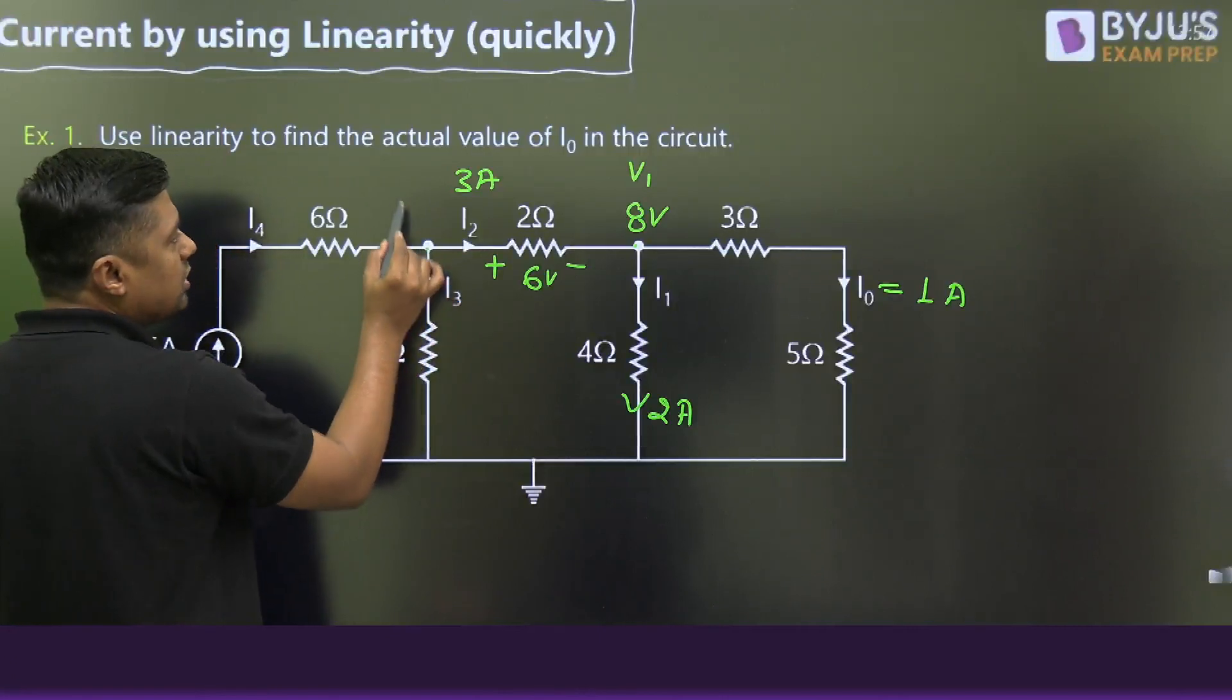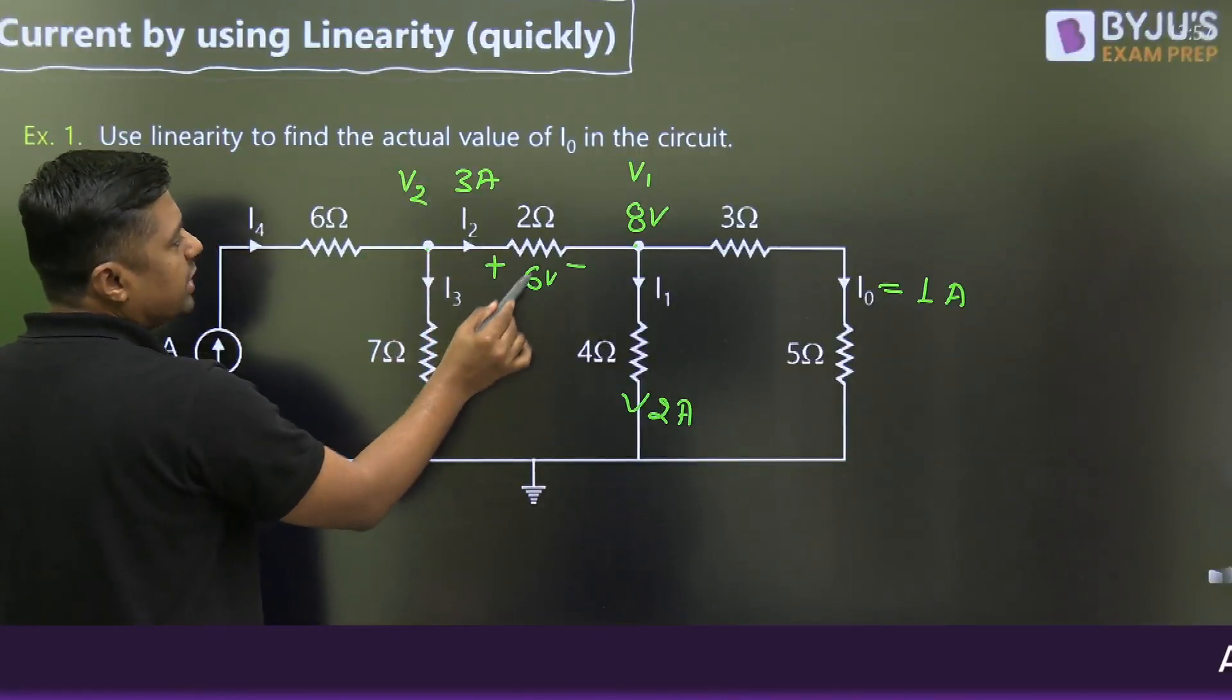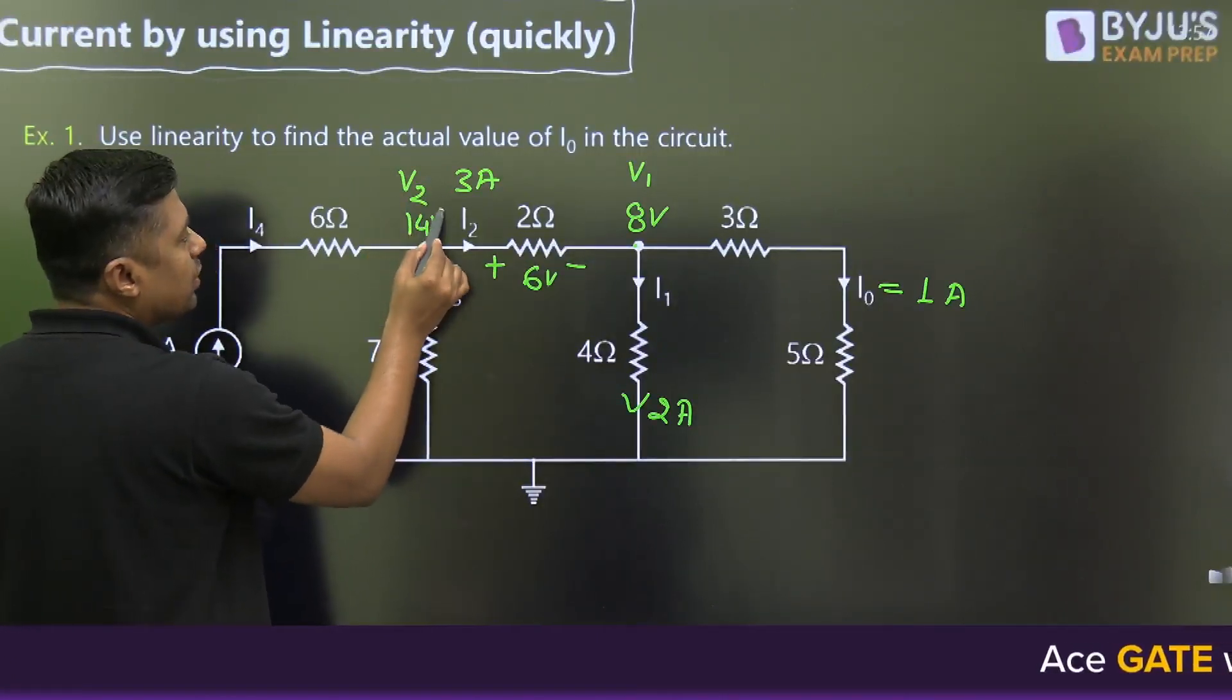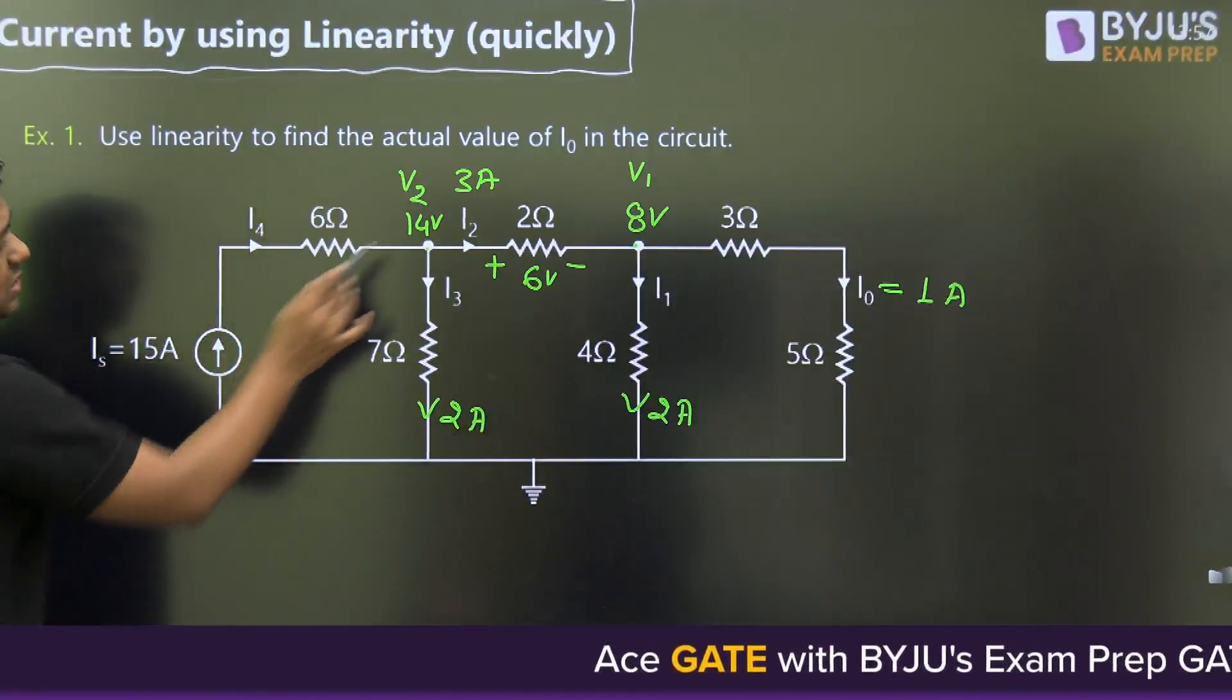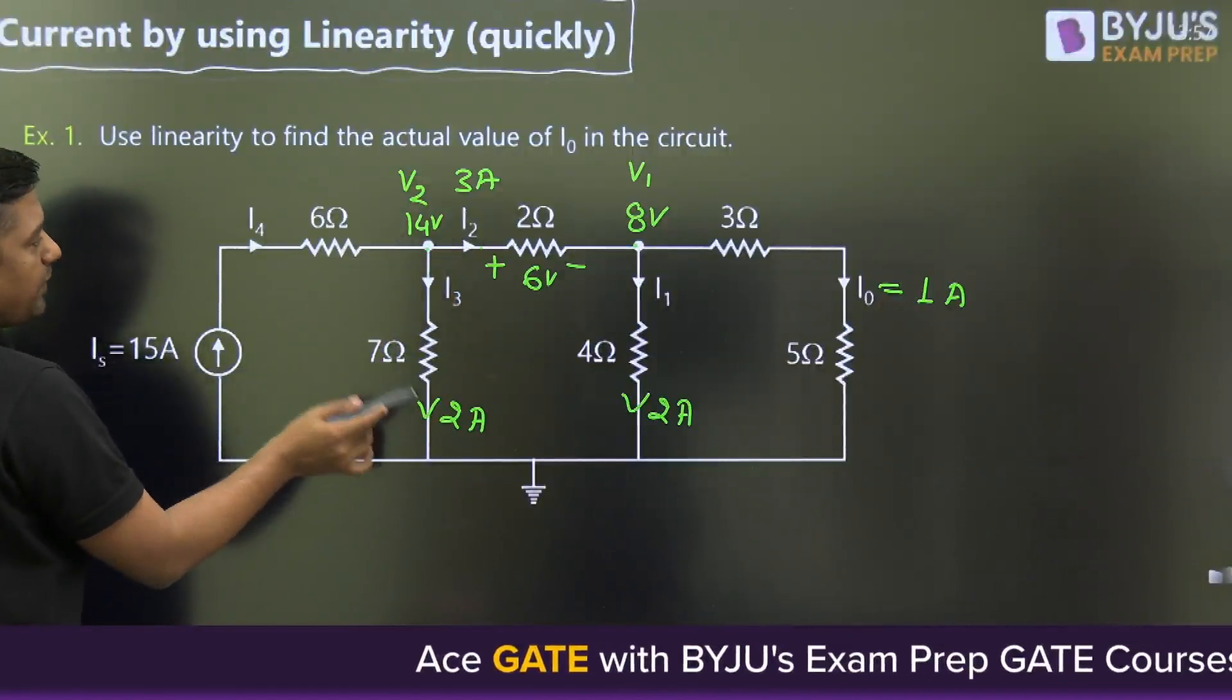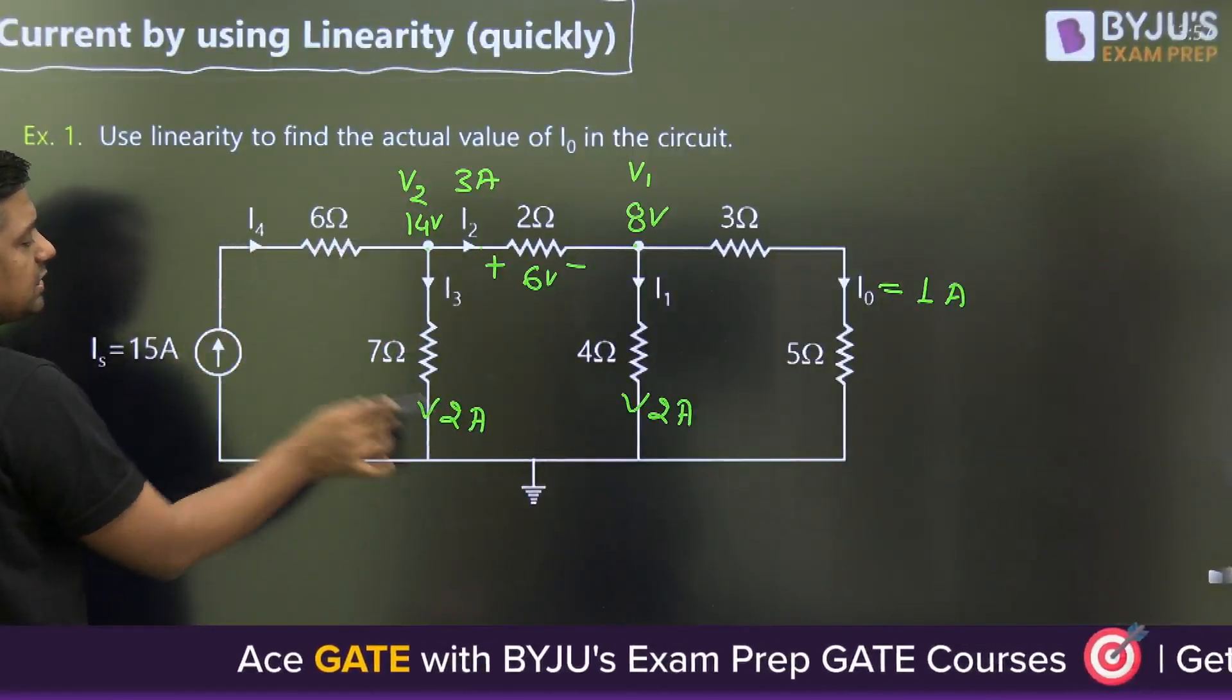What is the voltage at this point V₂? 6 plus 8 equals 14 volts. 14 divided by 7 is 2 amperes. In this branch 3 amperes, in this branch 2 amperes, so the incoming current is 3 plus 2 equals 5 amperes.